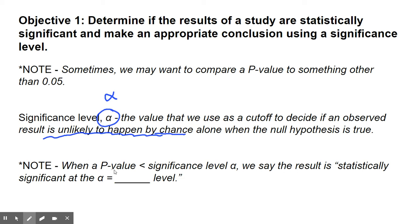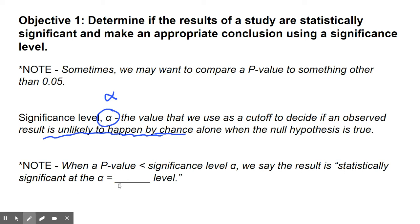When a p-value is less than the significance level, we say that the result is statistically significant at the alpha equals blank value or level. We do have to make sure that we talk about that, because that number could be 0.1 or could be 0.01. So you have to tell the reader what your level was.